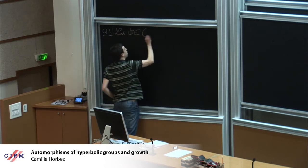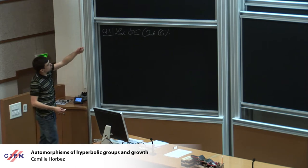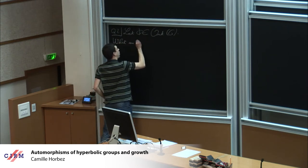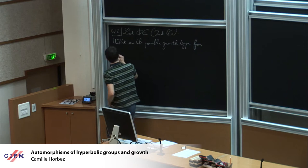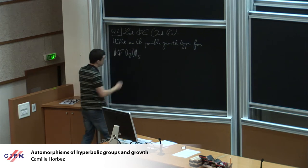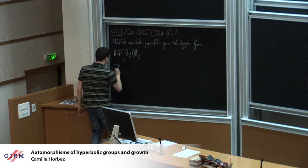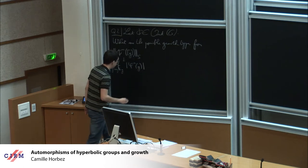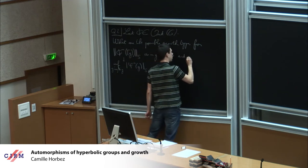There is an analogous question for outer automorphisms of the group. If I let capital Phi be an outer automorphism of G, outer automorphisms naturally act not on elements of the group but on conjugacy classes of elements. The analogous question is: what are the possible growth types for the conjugacy length of phi to the n of a conjugacy class of G? This is defined to be the infimum over all elements G prime conjugate to G of the word length of phi to the n of G, as n goes to infinity and as G varies in the group.